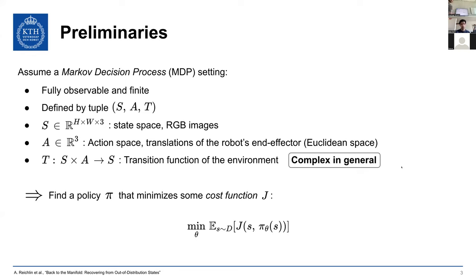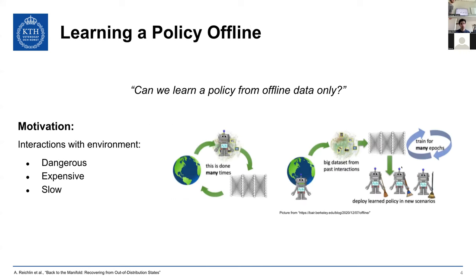When learning a policy, you parameterize a mapping pi from states to actions, define a cost function J, and the problem can be formulated as finding the best parameters to minimize that cost function. I want to take a step further and assume no access to the environment, which is a particularly sensible assumption in robotics — accessing the environment is not always trivial and can be dangerous and expensive, as moving a real robot can harm people or damage the robot.